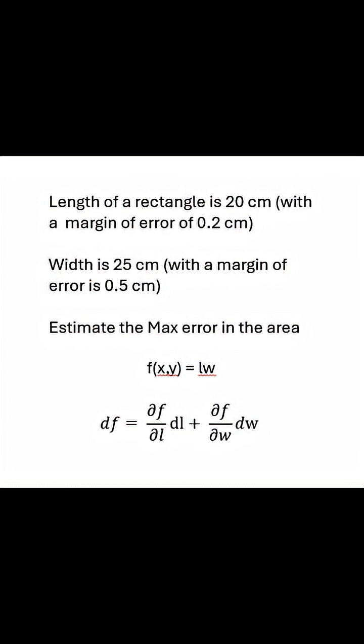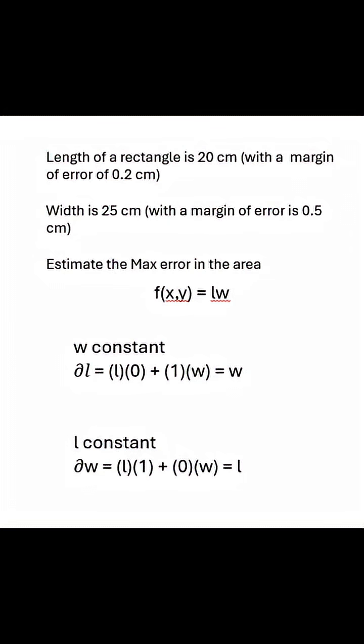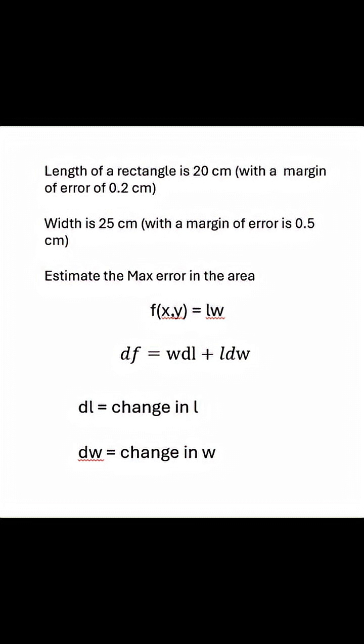Here's our f(x,y) equals length times width. First, we're going to take the partial derivatives, so w constant, l constant. We're going to put it back into the formula, and for dl we're going to use the change in l, for dw we're going to use the change in w.